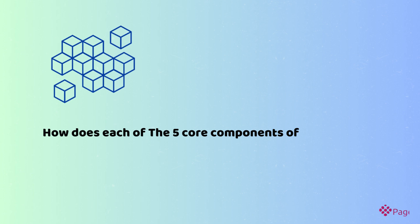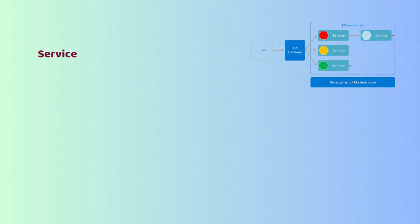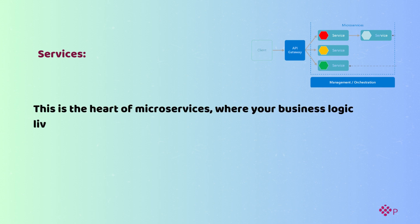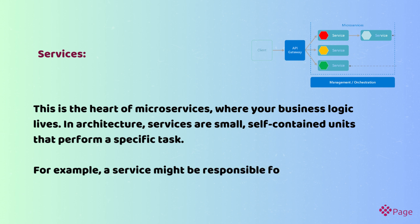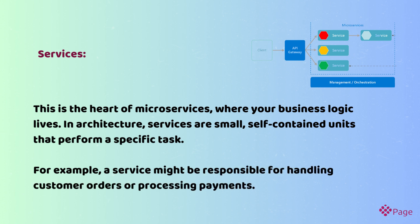How does each of the five core components of microservices architecture work? Services are the heart of microservices where your business logic lives. In architecture, services are small, self-contained units that perform a specific task. For example, a service might be responsible for handling customer orders or processing payments.